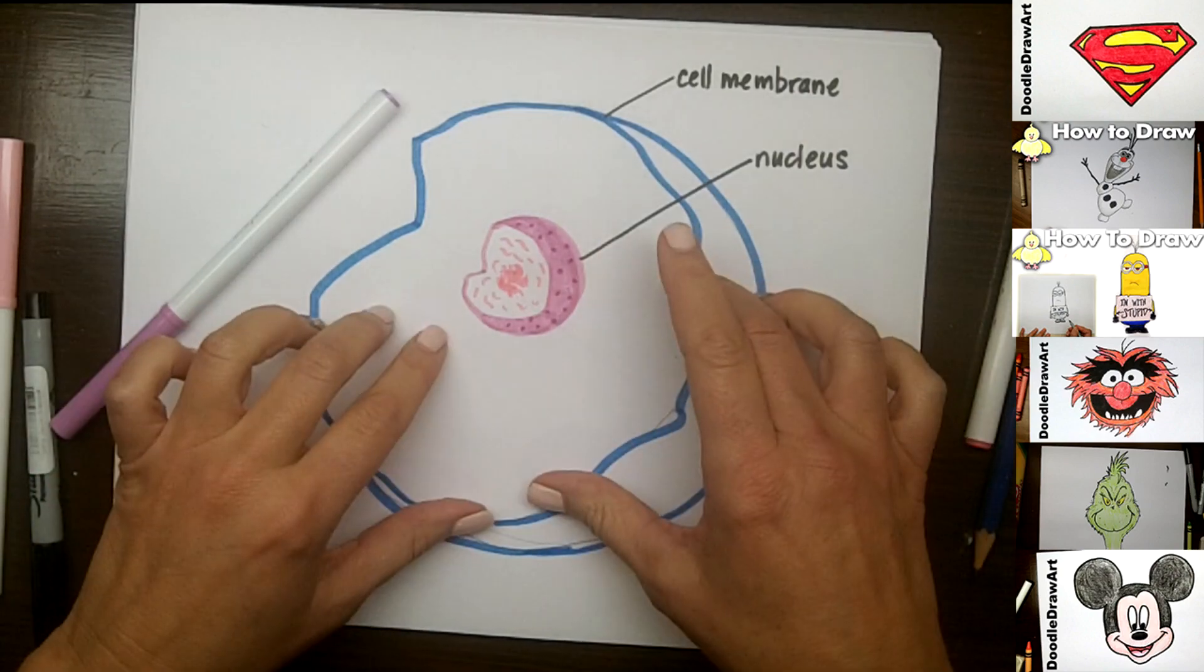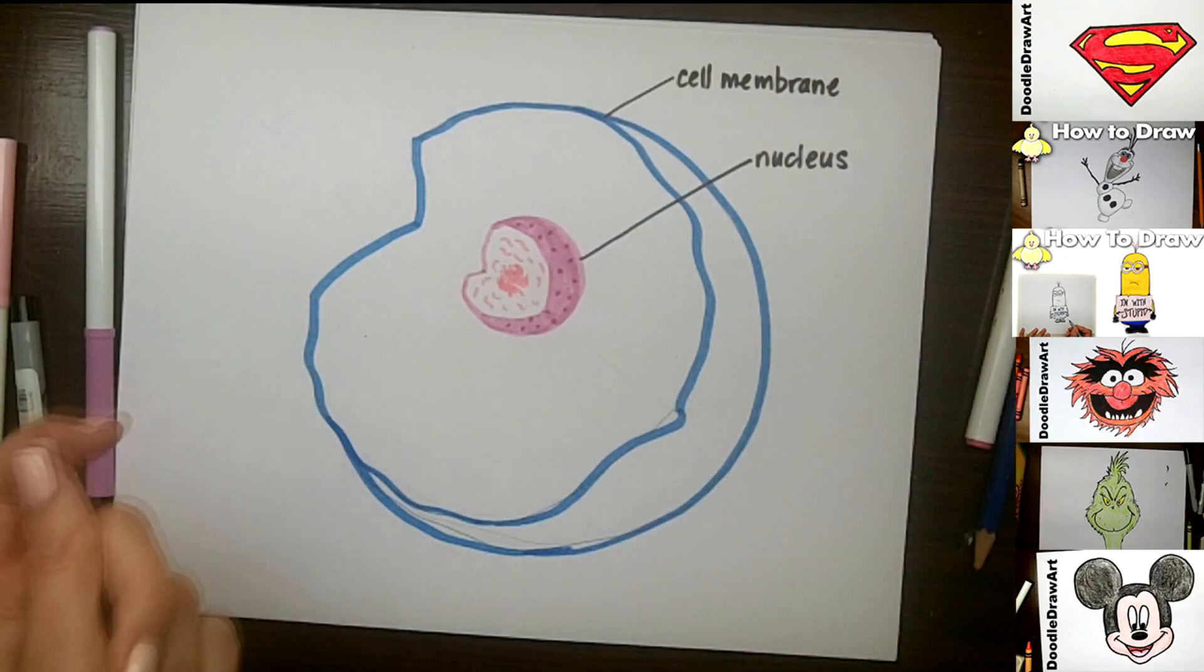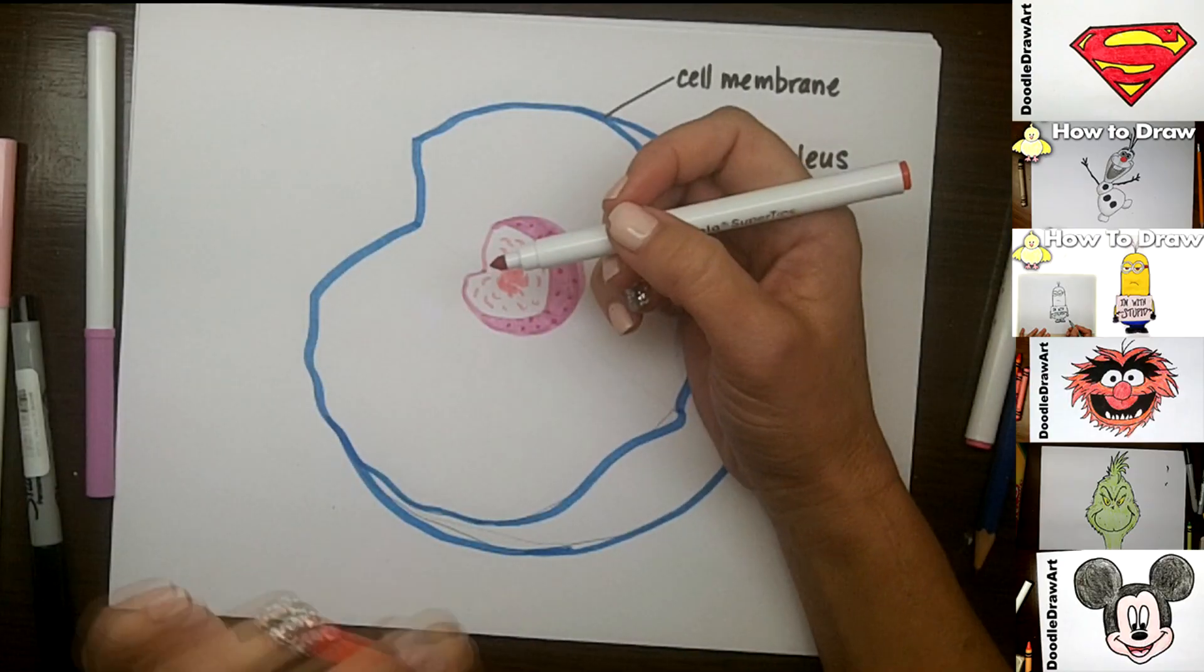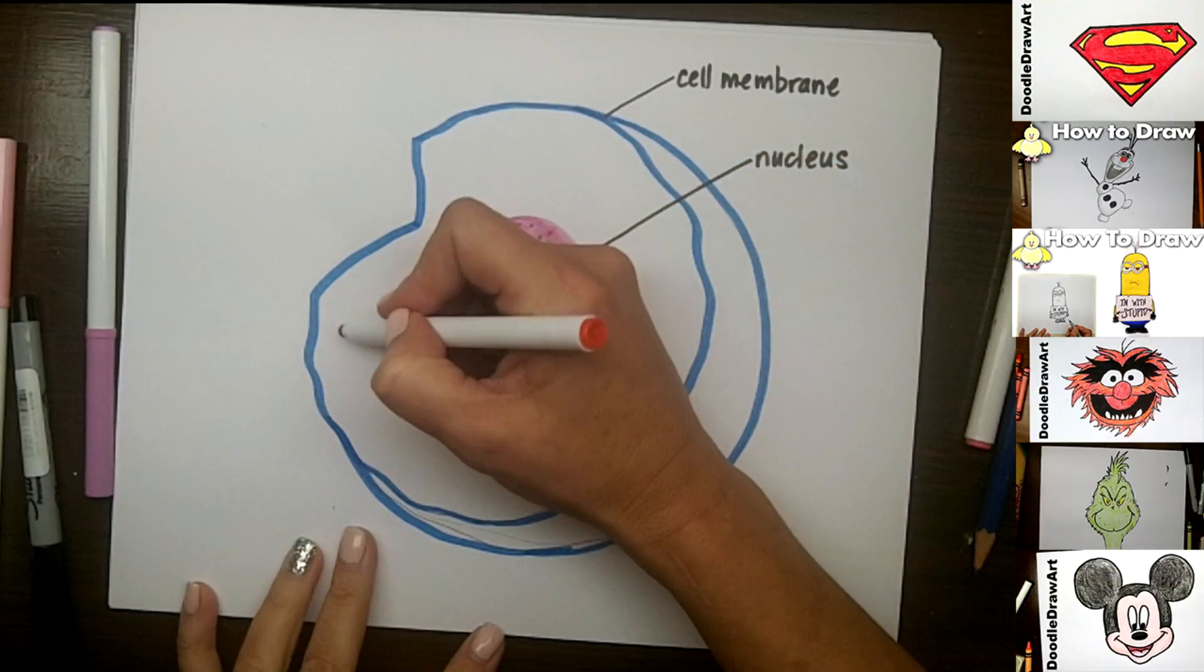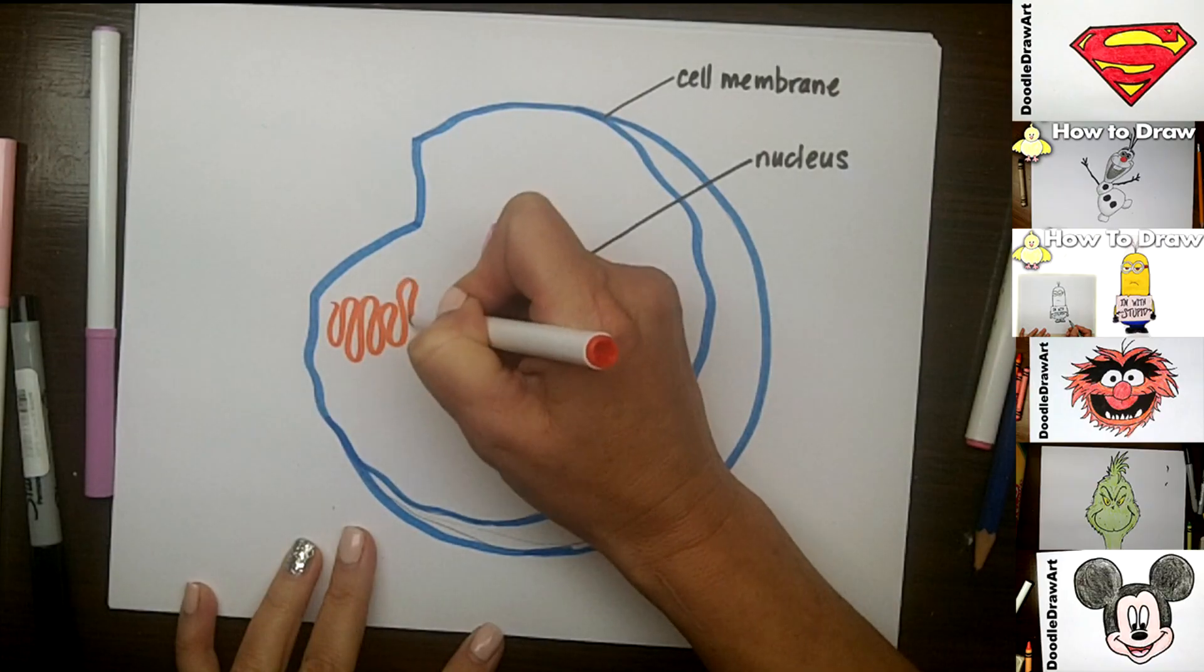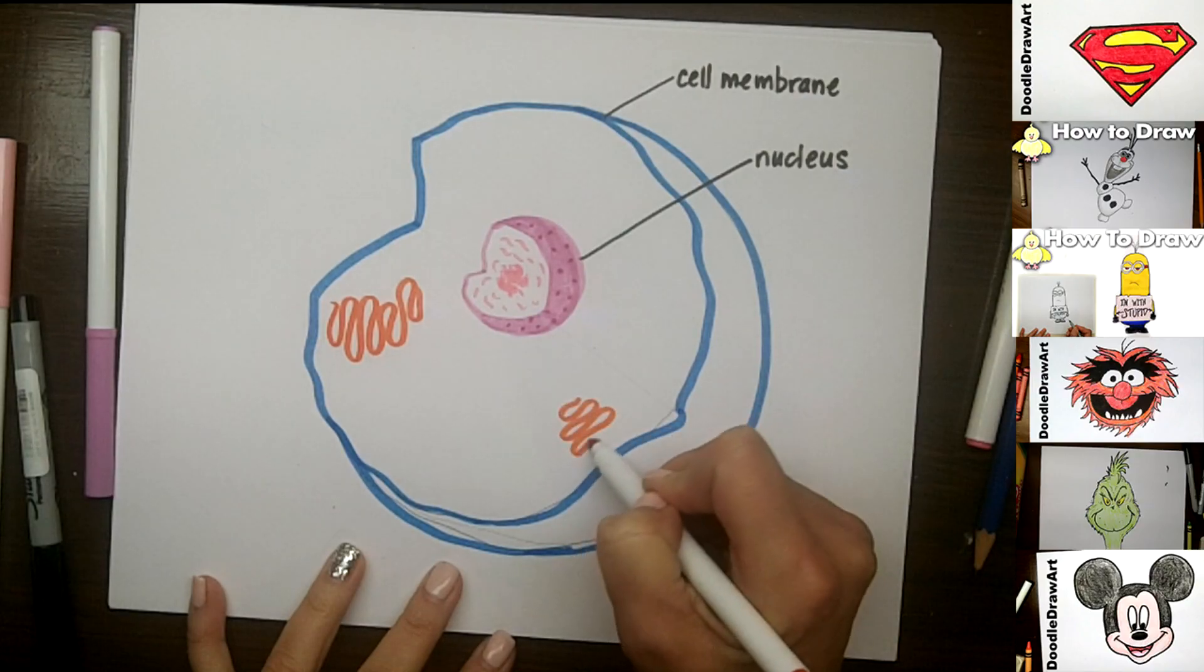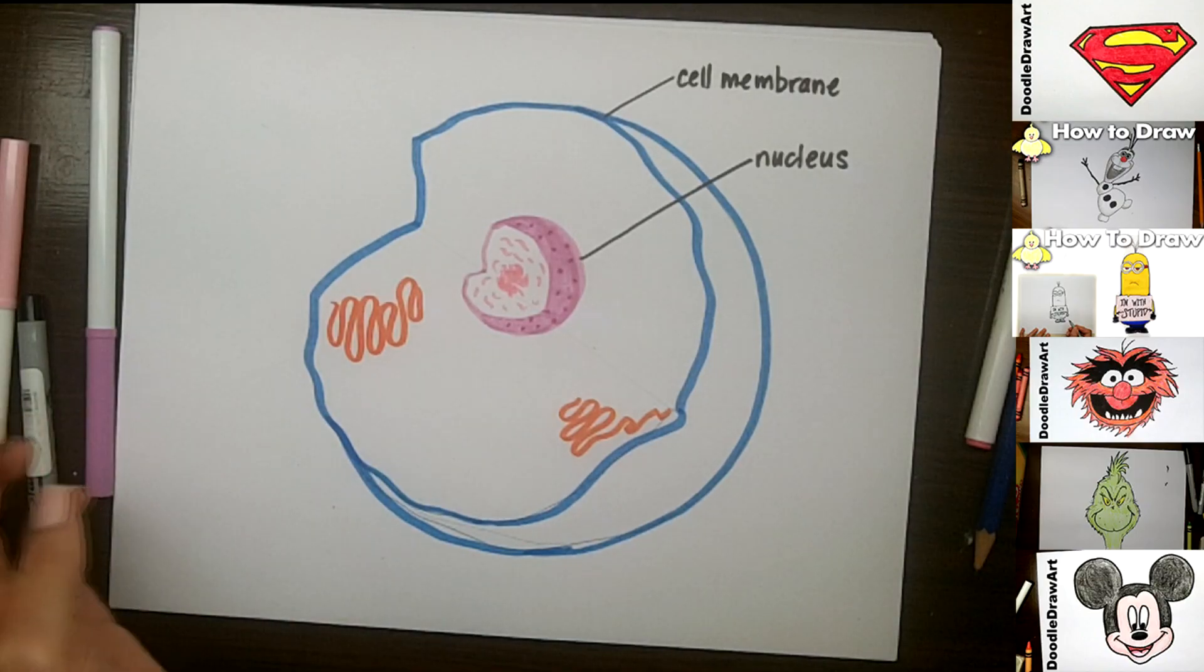All right. So now something else that's here in the cell is this endoplasmic reticulum. I always liked saying that word when I was in school. Endoplasmic reticulum. The ER. There's two types of ER. And it kind of looks like ribbons. So there's going to be smooth endoplasmic reticulum and also rough endoplasmic reticulum. So I'm just going to draw a little bit of smooth endoplasmic reticulum. And it's just going to be lining along like this, like so. We're going to call that the smooth endoplasmic reticulum. And we could put more than one of those if we wanted. Like so. And so the smooth endoplasmic reticulum is a transport mechanism in the cell.